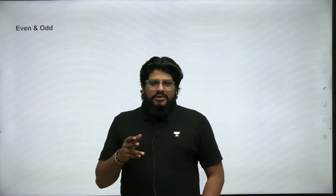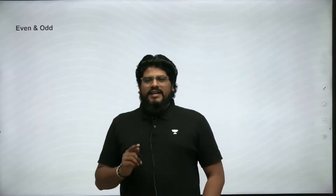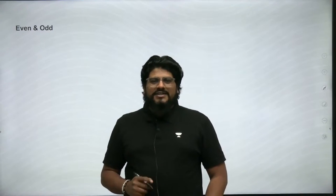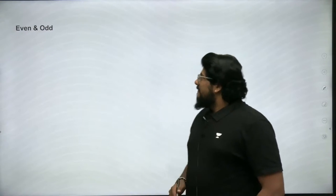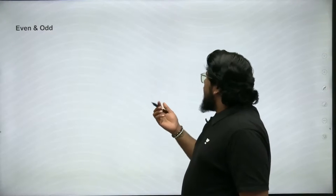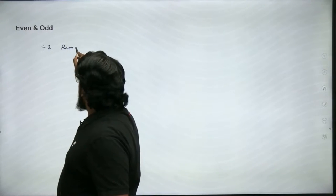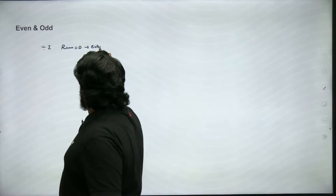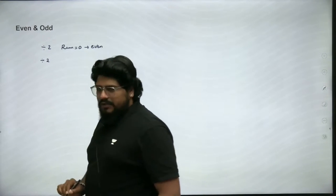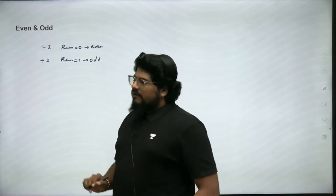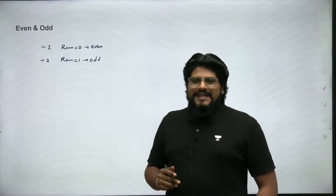Let's start this session with a question: Is zero even? Please comment in the comment box. If you have commented 'neither even nor odd,' you have missed our previous chapter — please go and see it to know whether zero is even or odd. Now let's move on to even and odd. A number when divided by two that leaves a remainder of zero is an even number. When dividing a number by two, if it leaves a remainder of one, that is an odd number. We discussed that zero is even in our previous chapter.